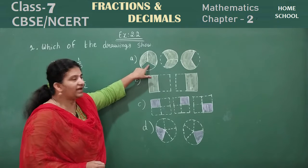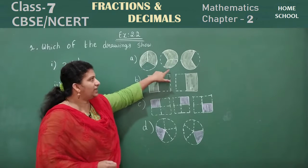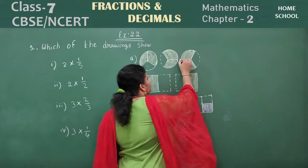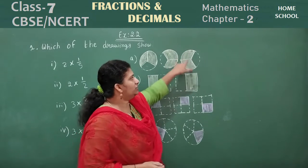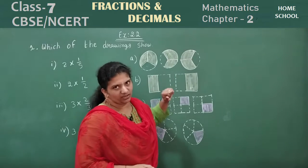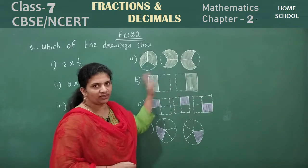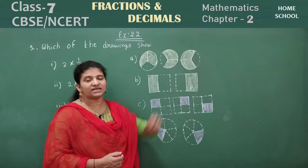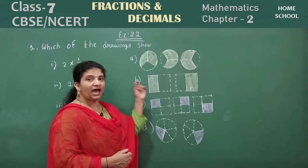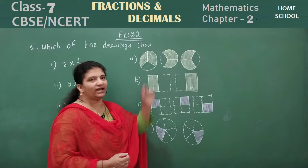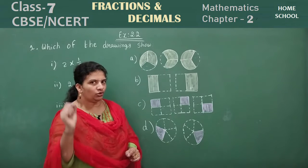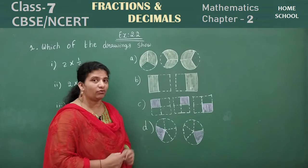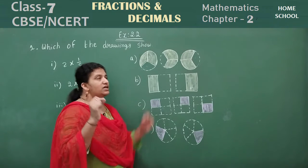So this fraction is 2 by 3, then this one 2 by 3, then this one also 2 by 3 — you can see the line here. One part is not shaded in all these. There are 3 such figures that have a fraction 2 by 3, so I can write 3 into 2 by 3.